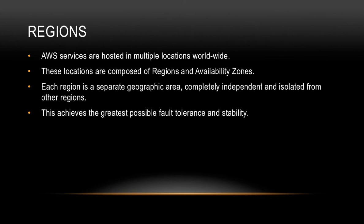Talking about the architecture of AWS, there are two things that we need to understand: number one is regions, and number two is availability zones. AWS services are hosted in multiple locations worldwide. These locations are composed of regions and availability zones. Each region is a separate geographical area, completely independent and isolated from other regions. This architecture achieves the greatest possible fault tolerance and stability.